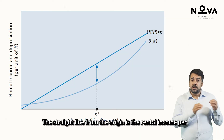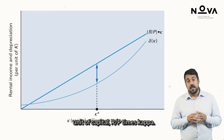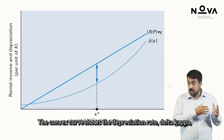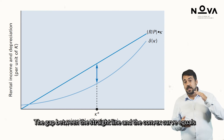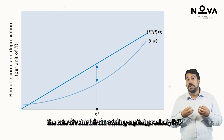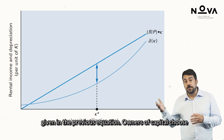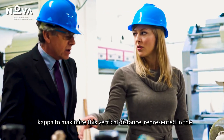Let's depict both terms graphically. The straight line from the origin is the rental income per unit of capital, R over P times Kappa. The convex curve shows the depreciation rate Delta(Kappa) as an upward sloping function of the capital utilization rate. The gap between the straight line and the convex curve equals the rate of return from owning capital — precisely R over P times Kappa minus Delta(Kappa) — as given in the previous equation.